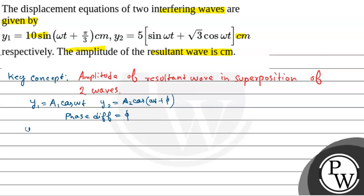Then from superposition of y1 plus y2, the resultant amplitude a dash will be root over of a1 square plus a2 square plus 2 a1 a2 cos phi.